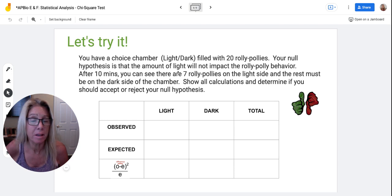So here's your deal. Your null hypothesis is that the amount of light will not impact roly-poly behavior. So if you have 20 roly-polies, then you would predict how many roly-polies. If light doesn't matter, how many would you expect on the light side and how many would you expect on the dark side if it has no impact?